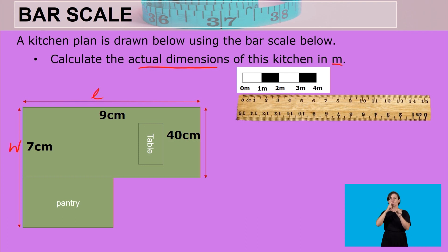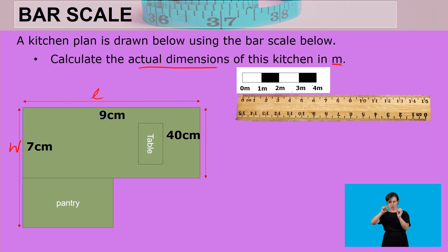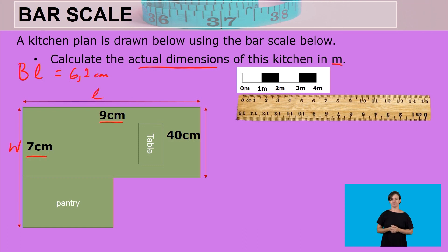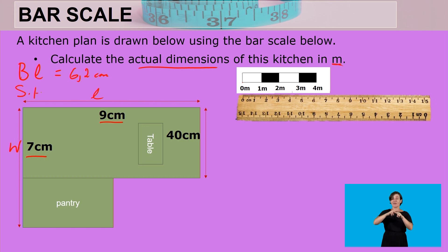We start with the balance. When we measure it, we get from zero up to 6.2 centimeters, so the bar length equals 6.2 centimeters. We are given the measured length of 9 centimeters and the measured width of 7 centimeters. Since our bar scale is 6.2 centimeters and represents up to 4 meters, our scale factor is 4 meters.